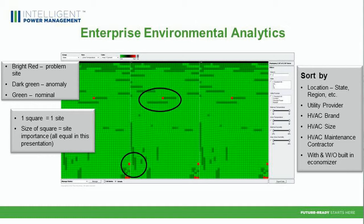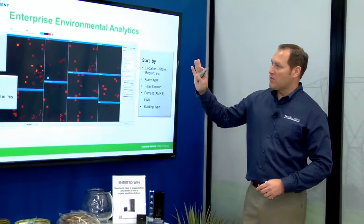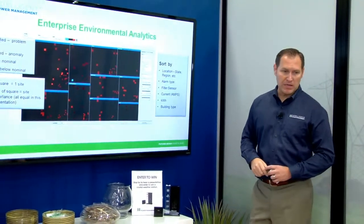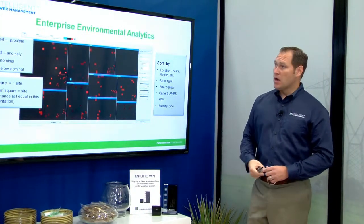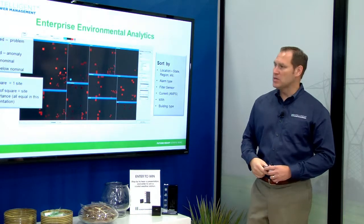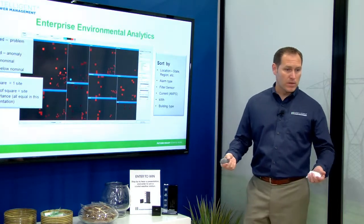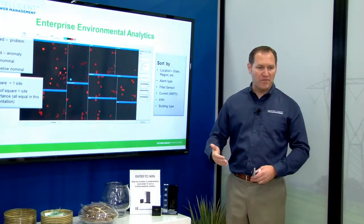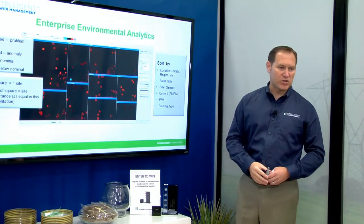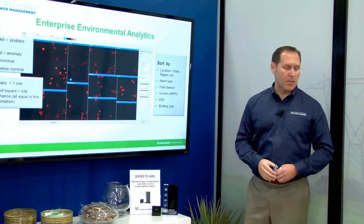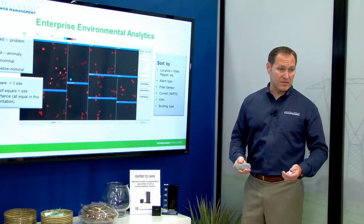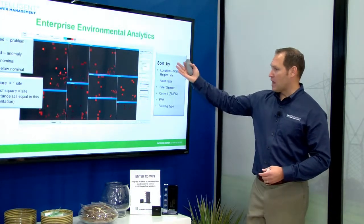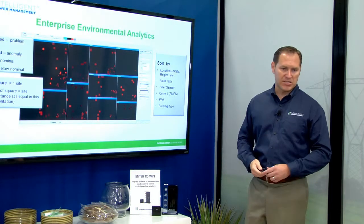We can sort this based on location, region, utility provider, HVAC brand, size, who services that particular site or piece of equipment — it doesn't matter. From a temperature point of view: bright red is a problem site, hotter than it should be; dark red is an anomaly, a little out of operational parameters; black means nominal; and blue means it's too cold. We look at both dark red and blue — blue likely means the air conditioner is overperforming and cooling the site more than it should, costing additional energy. Red probably indicates the HVAC is not performing to operational standards or is defective. We can sort by all these parameters — it's unlimited how we can sort based on the information we collect.